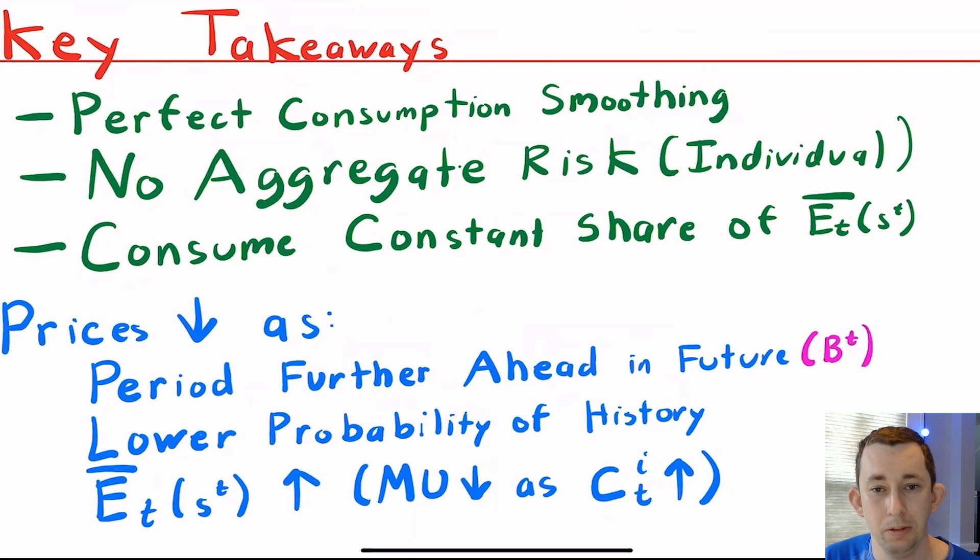So here are some key takeaways that we found over the course of this video. We talked about perfect consumption smoothing. There's no aggregate risk, right? There's two coconuts in every period. It's just whether or not Bill or Dave has those two coconuts. And we saw that they're consuming the constant share of aggregate endowment for prices because of that equation. Notice a couple of things.